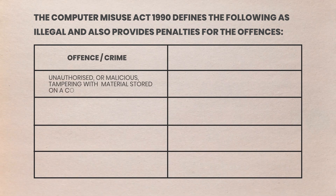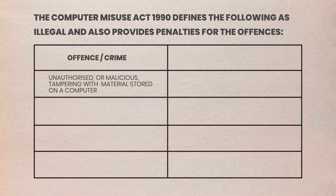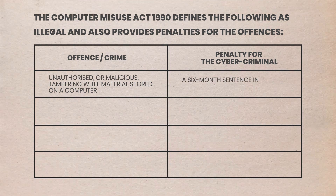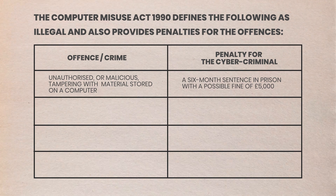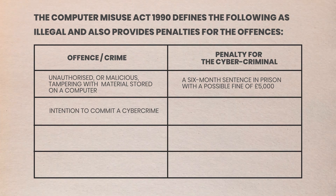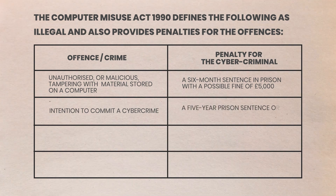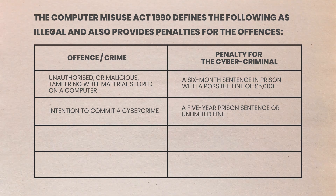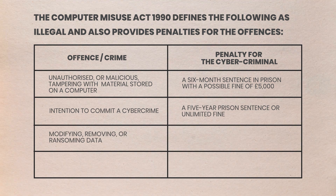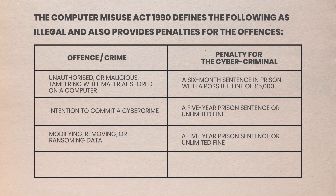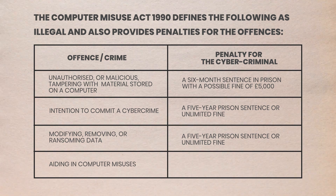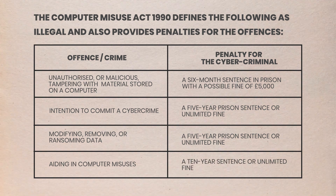Under the Computer Misuse Act 1990: Unauthorised or malicious tampering with material stored on a computer carries a six-month prison sentence with a possible fine of £5,000. Intention to commit a cybercrime carries a five-year prison sentence or unlimited fine. Modifying, removing or ransoming data carries a five-year prison sentence or unlimited fine. Aiding in computer misuse carries a ten-year sentence or unlimited fine.